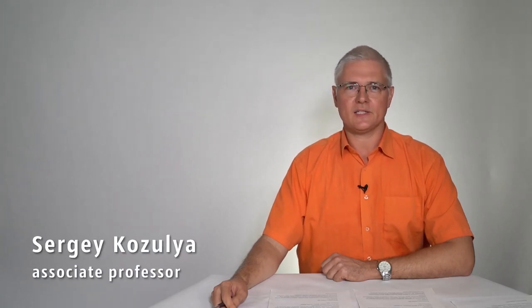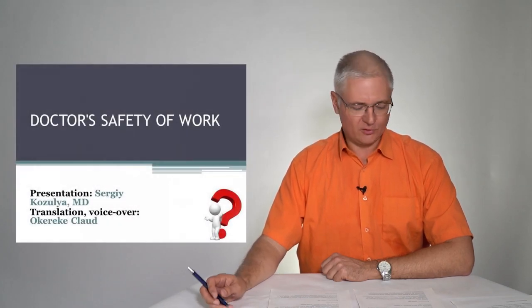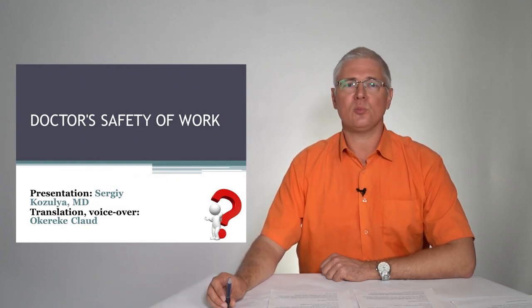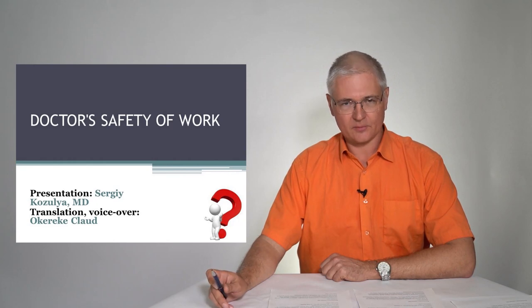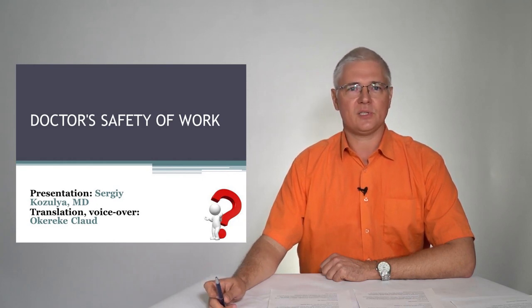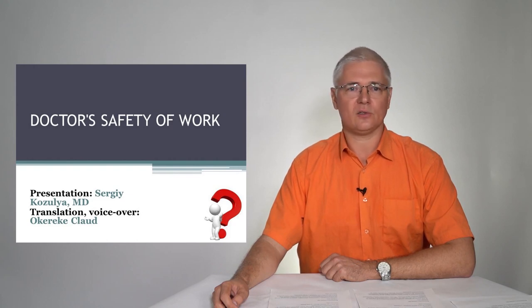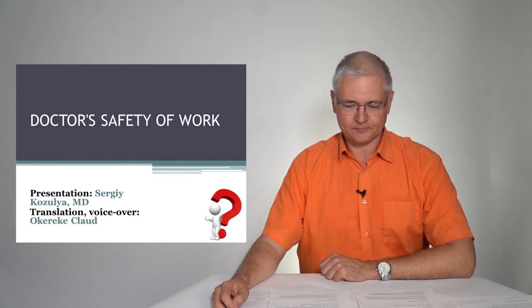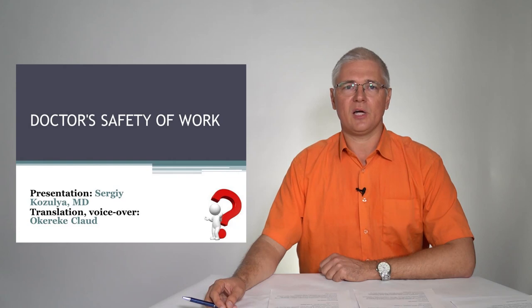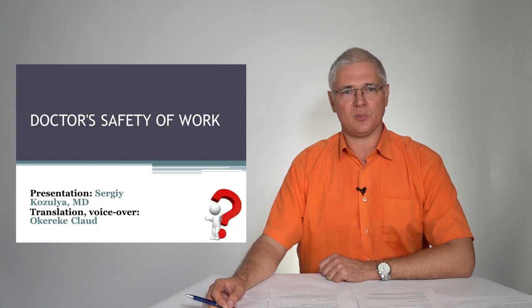Good day everyone. In this lecture, using the example of the Labor Code of the Russian Federation, we will talk about how the government protects its employees. We will analyze the problem of child labor in Russia, discuss the social protection of pregnant women, and pay special attention to the labor protection of medical workers. We will learn about the adverse physical, chemical, biological and psychological factors that affect the medical worker, and discuss possibilities for creating comfortable and safe working conditions.